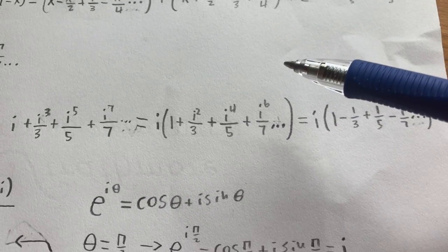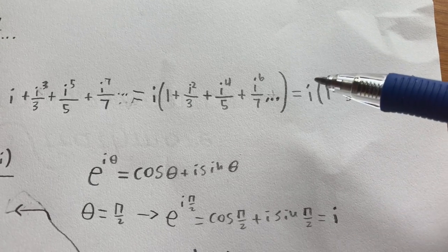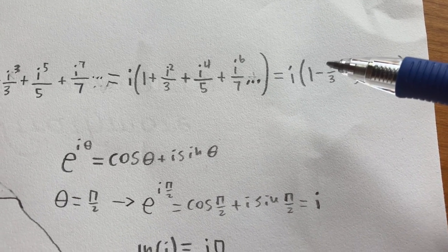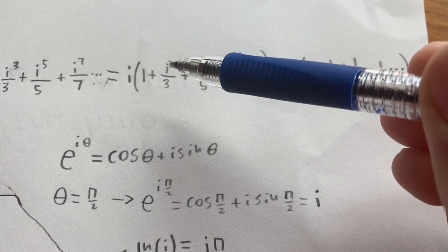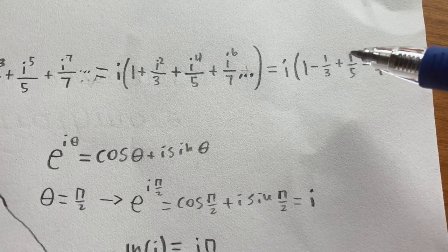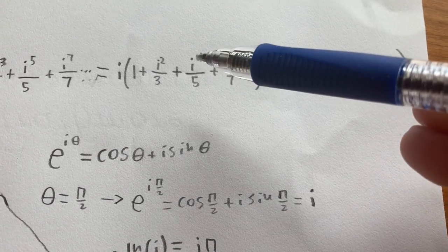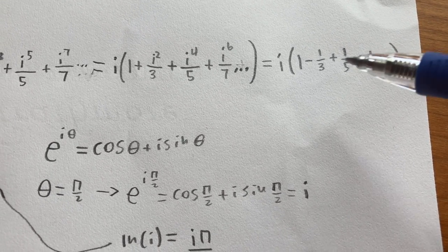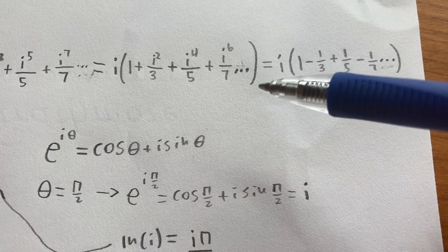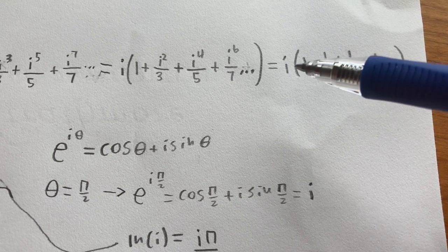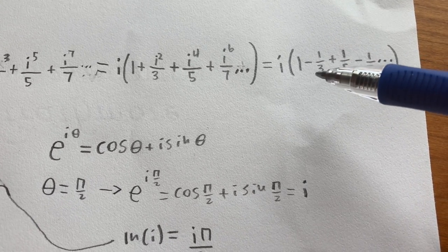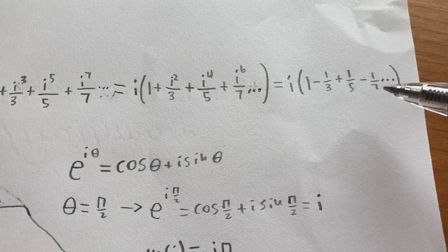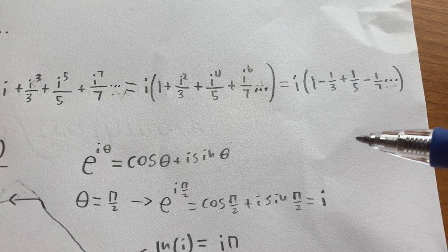Now we realize that the first term will be positive. The second term will be negative because i squared is equal to negative 1. The third term will be positive because i to the fourth is equal to 1. The fourth term will be negative because i to the sixth is negative 1, and we realize it will alternate between being positive and negative. So we get that it is equal to i times 1 minus 1 third plus 1 fifth minus 1 seventh, etc.